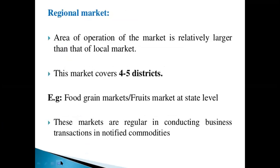The regional market covers a relatively larger area of operation than the local market, typically spanning 4 to 5 districts. Commodities like food grains, fruits, and textiles are traded here. These markets are regular in conducting business, and transactions are in notified commodities.